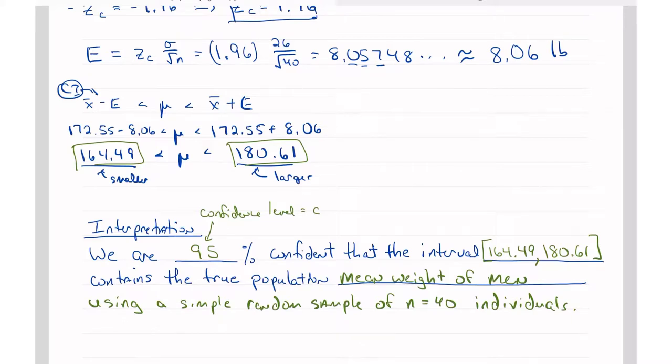So here's our interpretation, and it always needs to be in this form. You use this form every time you'll get this part of it right. And this is the most important part, what we're telling people who have not had statistics. If I told you before today, we are 95% confident that this interval, 164.49 pounds and 180.61 pounds, that contains the true mean weight of men, and we used a simple random sample of 40 men, I think you would have a pretty good idea of what I was talking about.